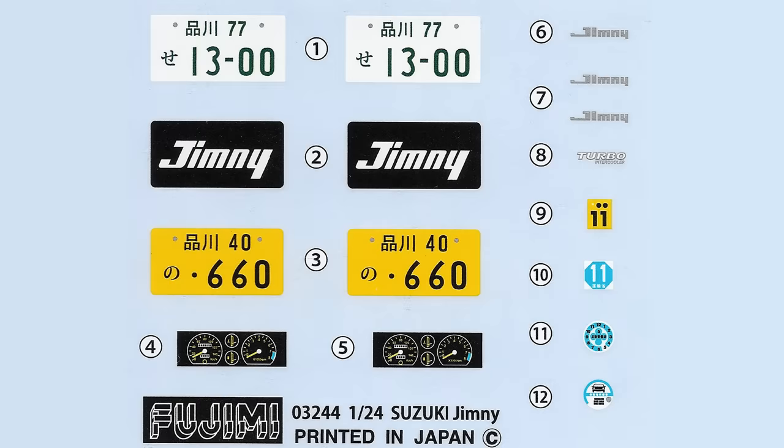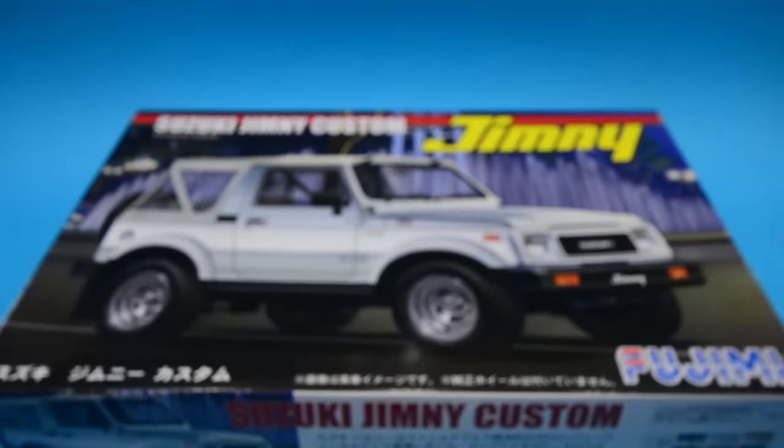We'll start off with the decals. For a basic kit you get plenty of decals with two options of dials, some yellow K-plates and normal white ones, or you could finish it off with the Jimny ones. There are a few little Jimny decals for the rear and a little turbo one as well, plus various little 9, 10, 11, and 12 ones.